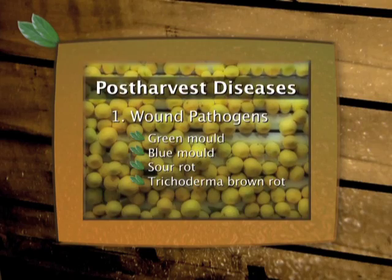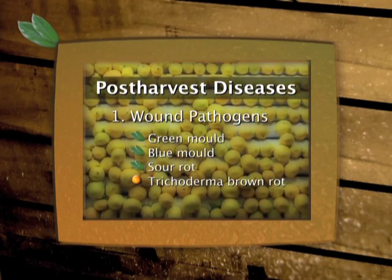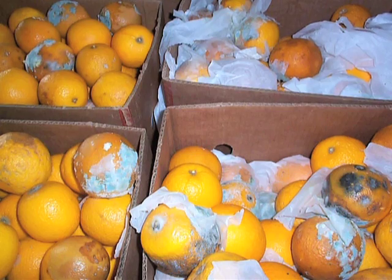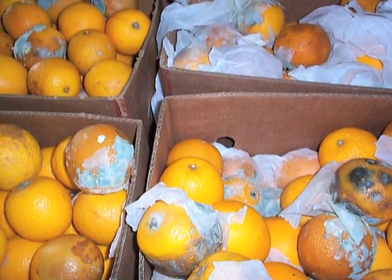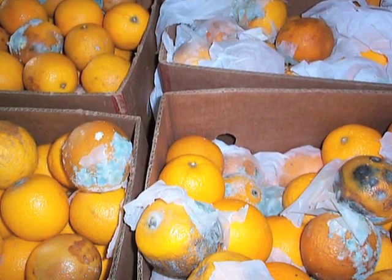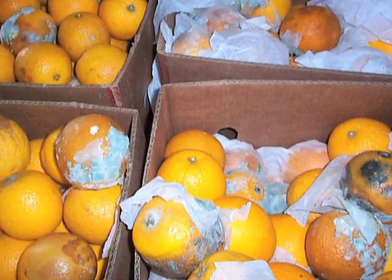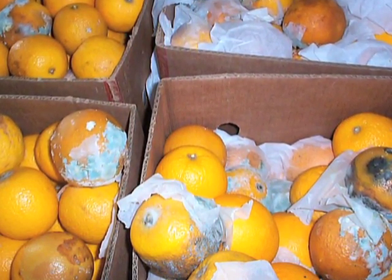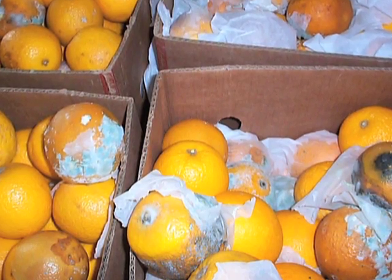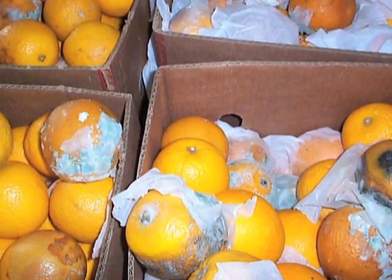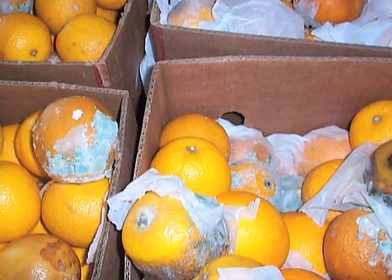The Trichoderma brown rot fungus is found in soil and attacks the fruit of all citrus varieties. Initial infection requires an injury to the fruit, but in packed cartons the fungus spreads from infected fruit to healthy fruit. Trichoderma causes cellulose to decompose and can grow on paper, cardboard and wood. It can therefore establish in wrappers, cartons, pallets and wooden bins, from where it can grow again and infect healthy fruit.